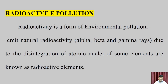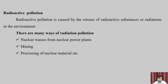Welcome to the section. Today we will learn about radioactive pollution. Radioactivity is a form of environmental pollution. Natural radioactivity — alpha, beta, and gamma rays — is due to the disintegration of atomic nuclei of some elements, known as radioactive elements. Radioactive pollution is caused by the release of radioactive substances or radiations into the environment.